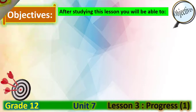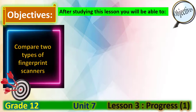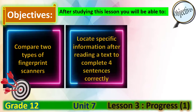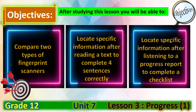Let's start as usual with the objectives of today's lesson. After studying this lesson, you will be able to compare two types of fingerprint scanners, locate specific information after reading a text to complete four sentences correctly, and locate specific information after listening to a progress report to complete a checklist.